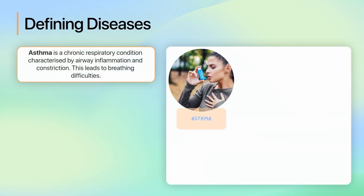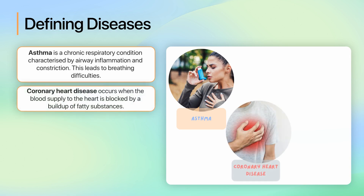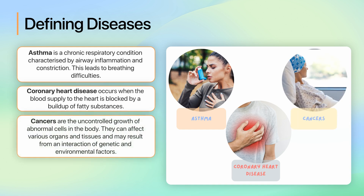Let's look at some examples of non-communicable diseases. Asthma is a chronic respiratory condition characterised by airway inflammation and constriction, leading to breathing difficulties. Coronary heart disease occurs when the blood supply to the heart is blocked or interrupted by a build-up of fatty substances. Cancers are the uncontrolled growth of abnormal cells in the body, affecting various organs and tissues, and may result from a complex interaction of genetic and environmental factors.